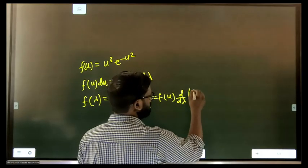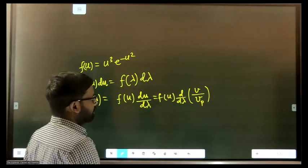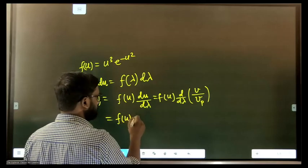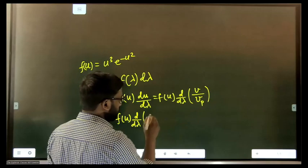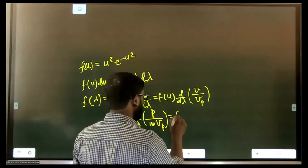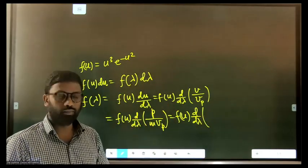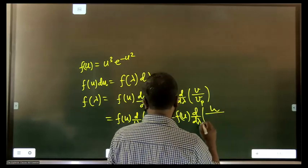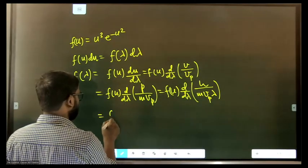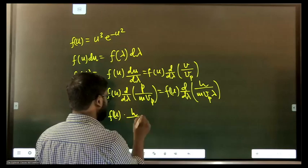We write u = v/vp, so du/dλ = d/dλ of (v/vp). Now velocity v can be written as momentum divided by mass: v = p/m. So u = p/(m·vp). We now express p in terms of the de Broglie wavelength: p = h/λ. So u = h/(m·vp·λ).